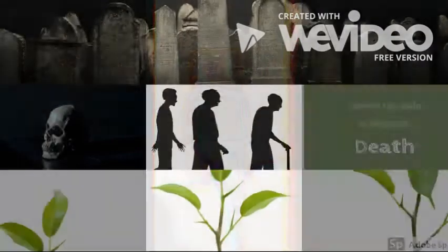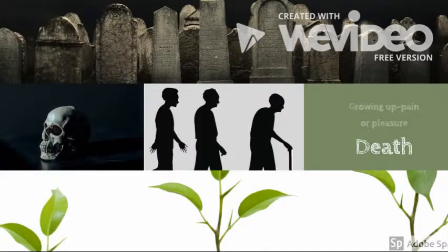The two themes that I chose for this book were death and growing up. Death is a big part of the story because without it, there wouldn't be much of a story. 14 years ago, Ariel Benson's parents died, which started the whole mystery. She goes on this journey to find out who killed her parents, but when she does, he kills Nora, her grandma's best friend too.